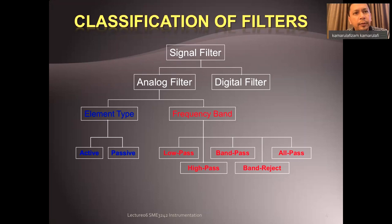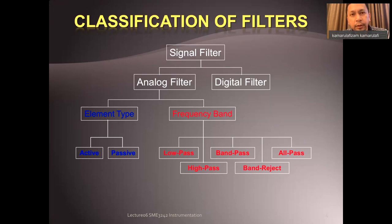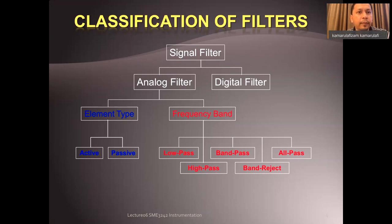For this course, we are looking at the analog filter. We have active and passive element types, which we will go through in detail. You will also look at the frequency band dimension — low pass, high pass, band pass — those are the three basic types. There is also all pass, band reject, and notch, which are complementary.